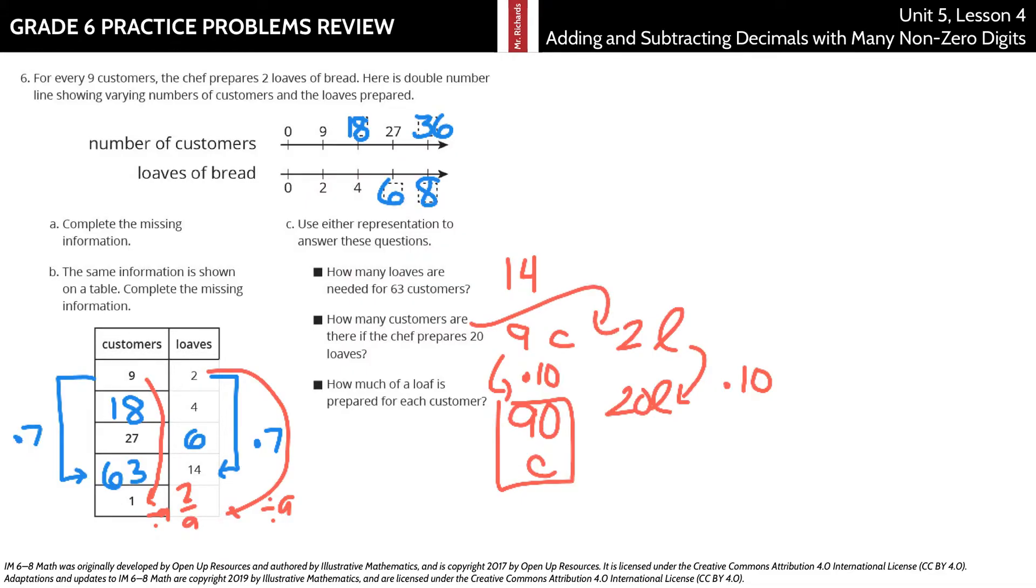How much of a loaf is prepared for each customer? Well, that's that two ninths of a loaf. And that's it for this grade six practice problems review on unit five, lesson four, adding and subtracting decimals with many non-zero digits. Good luck.